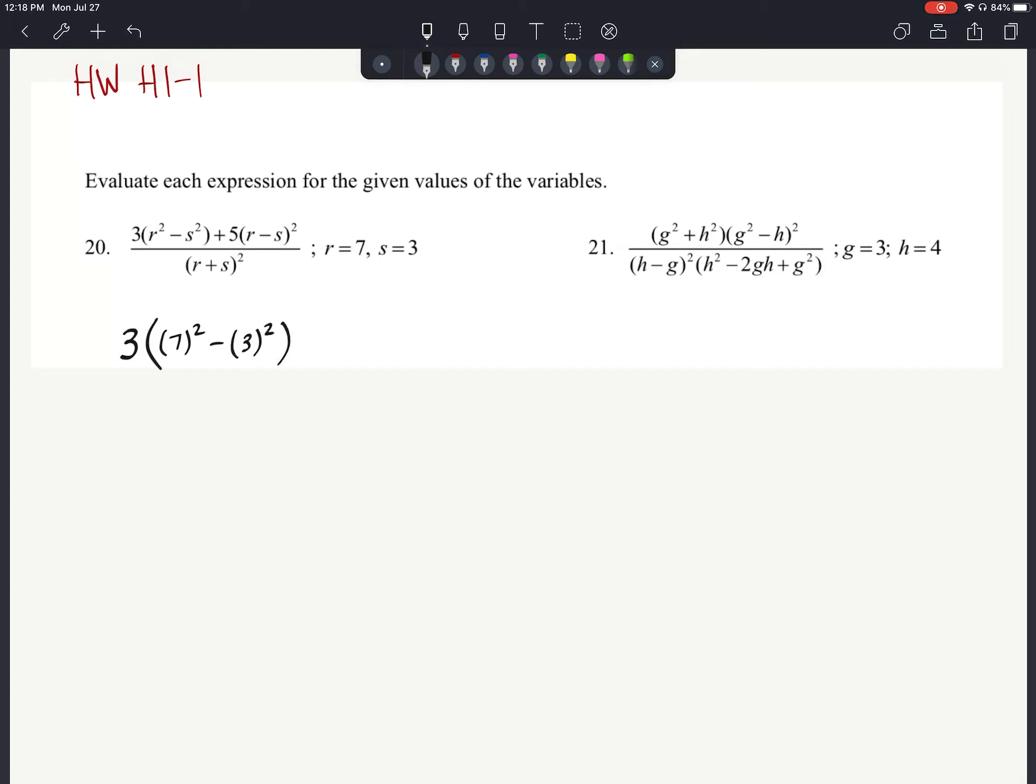We're going to have a 3 squared minus 4. And then we'll square on the outside there. On the bottom, we'll have an H minus G. So that's going to be a 4 minus 3. And then we're going to square that. And then we're going to say a 4 squared minus 2 times 3 times 4 plus a 3 squared inside that last set of parentheses there.